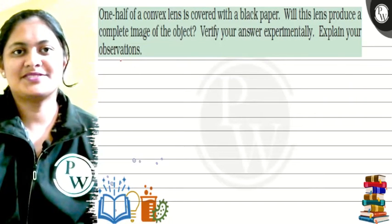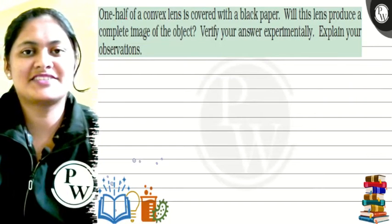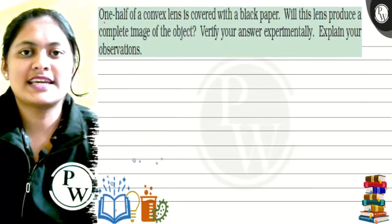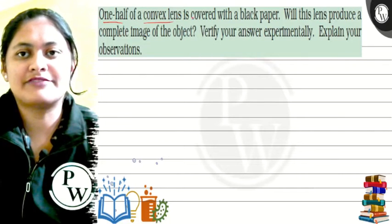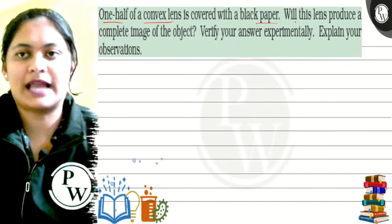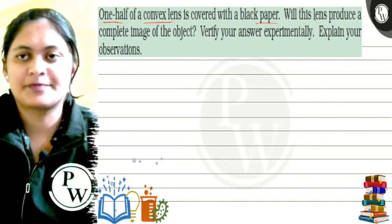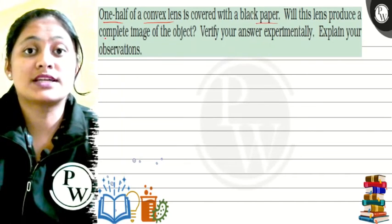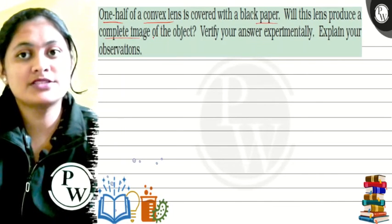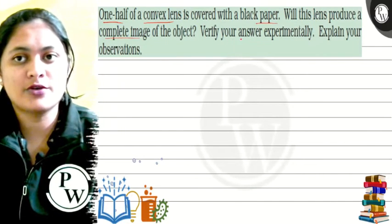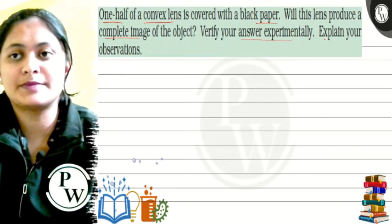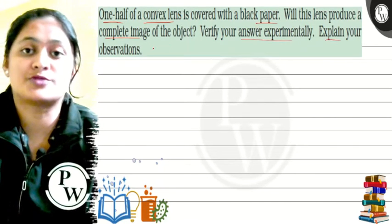The question says that one half of the convex lens is covered with black paper. Will this lens produce a complete image of the object? Verify your answer experimentally and explain your observations.